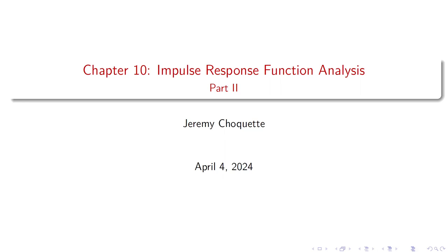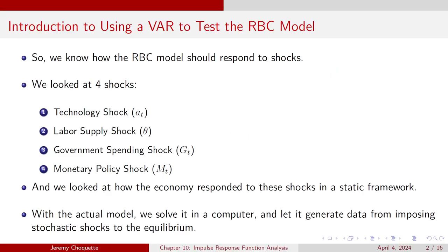In the last lecture we learned about vector autoregression models, the dynamic relationships, and how to get a meaningful impulse response function. What you really need to know is how to interpret impulse response functions. In this lecture we're going to tie together what we learned about the real business cycle model — namely the responses to shocks — with the impulse response material from the last lecture.